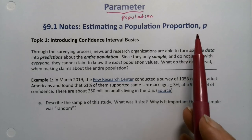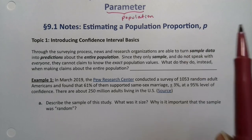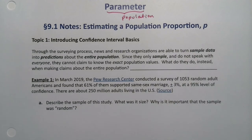This is the first parameter we're working with, population proportion P. But before we get into that, let's learn a little bit about confidence interval basics, and hopefully this example will help us out.